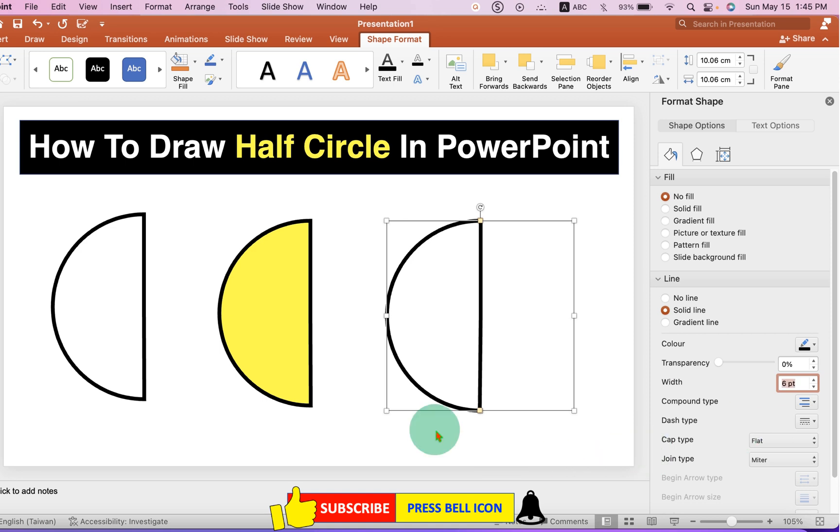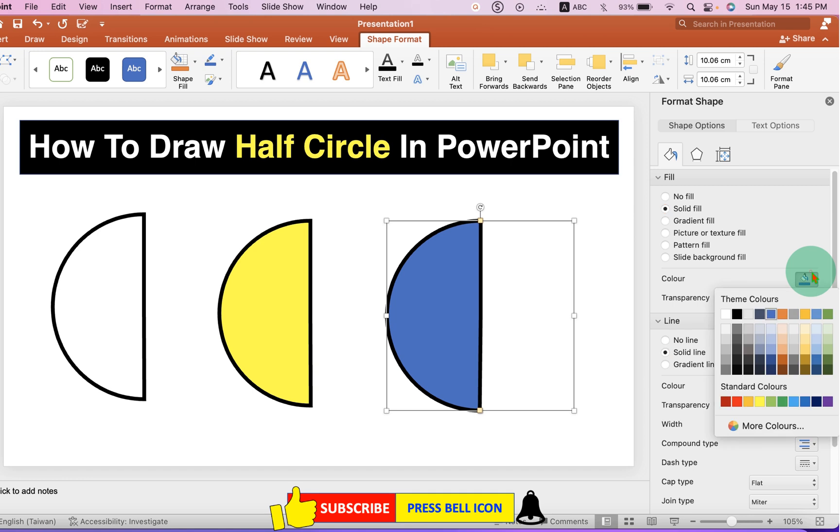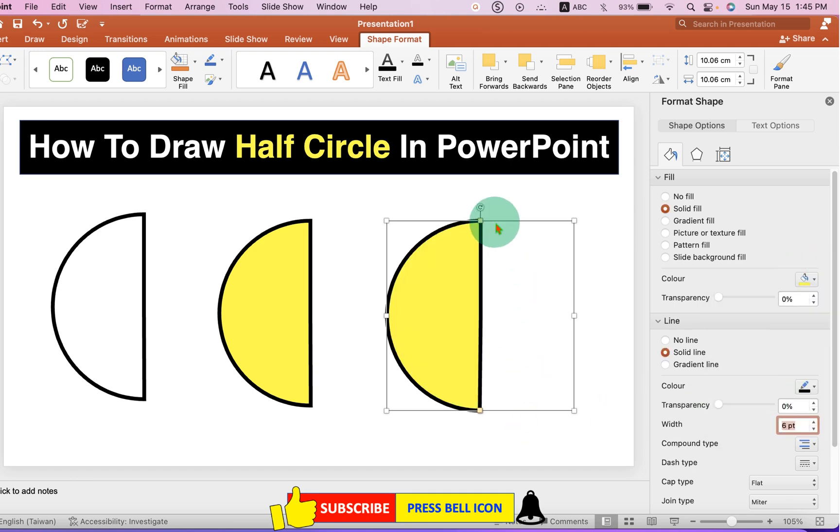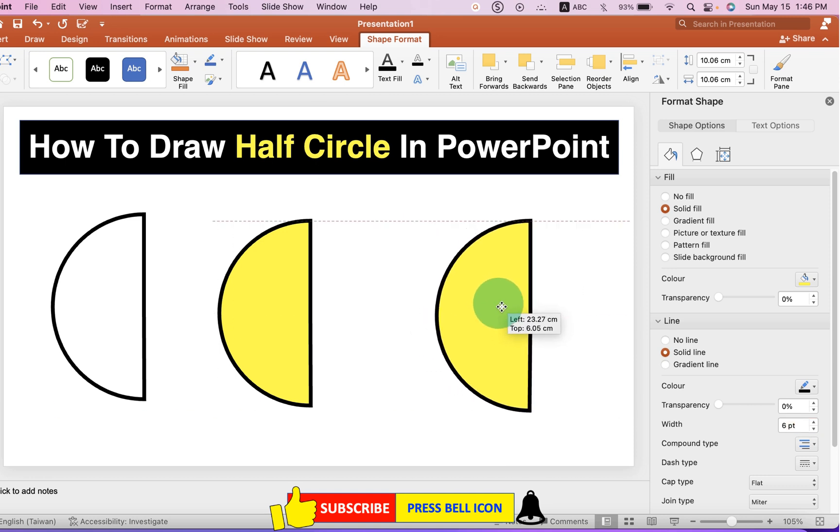If you want to fill color inside this circle, under the Fill option select Solid Fill and select the color of your choice, for example yellow color. Now you can move the shape anywhere inside the PowerPoint slide and you can also rotate the shape as required.